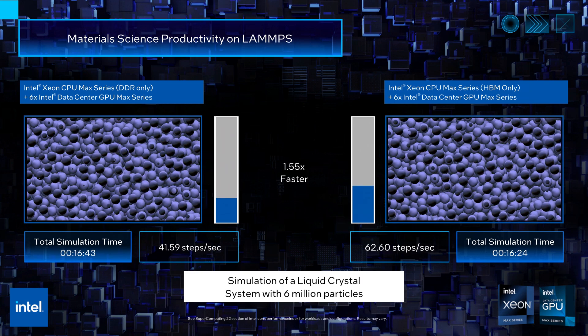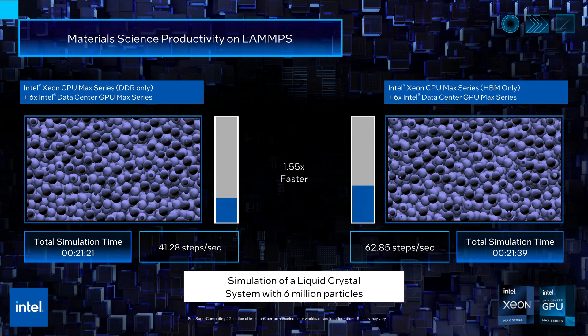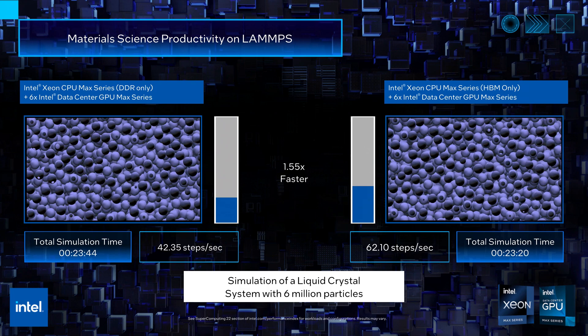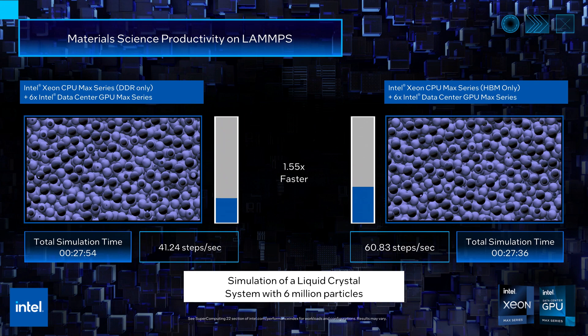This memory bandwidth bound portion can be accelerated with the high bandwidth memory enabled on the Xeon CPU Max series, while the predominant compute bound segment is offloaded to the GPUs.